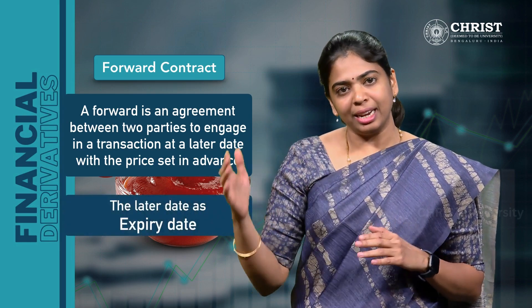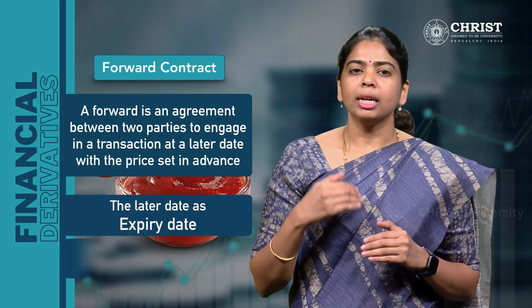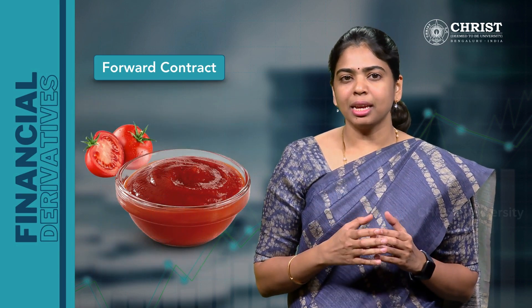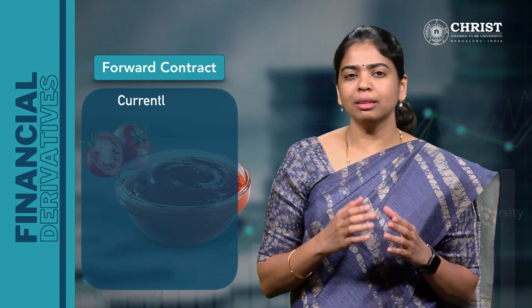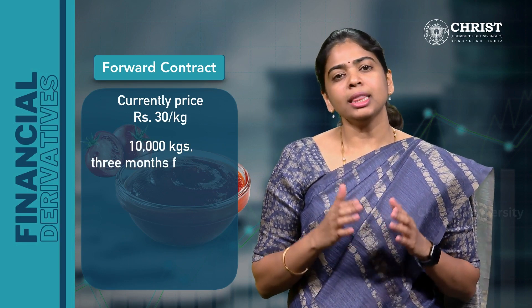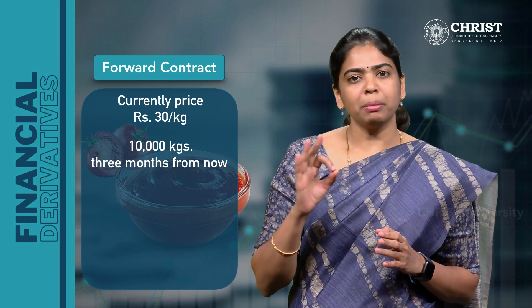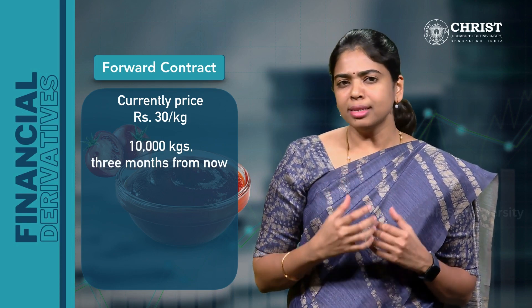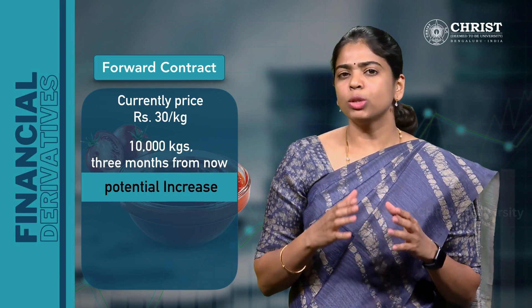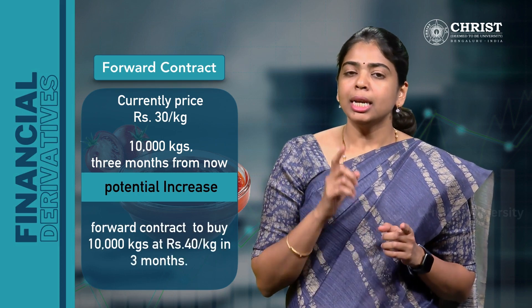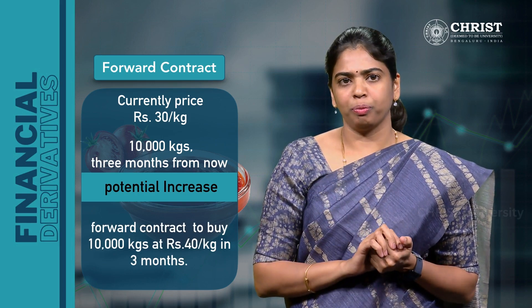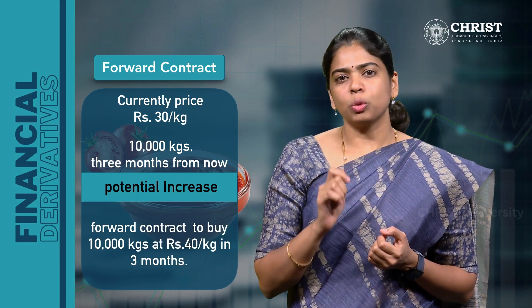The later date is referred to as the expiry date and the pre-decided price is referred to as the forward price. So let us say currently tomatoes are selling at ₹30 per kg in the market. Assume that the company will require 10,000 kg of tomatoes 3 months from now. It is concerned about a potential increase in the price of tomatoes. Thus, it enters into a forward contract with a trader to buy 10,000 kg of tomatoes at ₹40 per kg 3 months from now. So here, the forward price is ₹40 per kg.